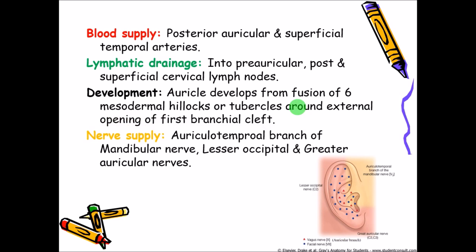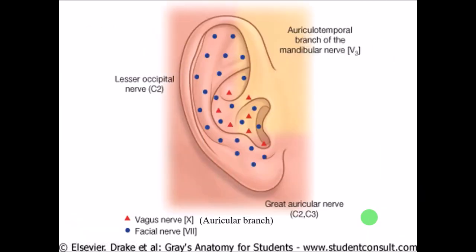Coming to the nerve supply: the nerve supply is by the auriculotemporal branch of the mandibular nerve. The helix region will be supplied by the auriculotemporal branch of the mandibular nerve. The posterior part of the pinna will be supplied by the lesser occipital nerve, and the lowermost part by the greater auricular nerve.